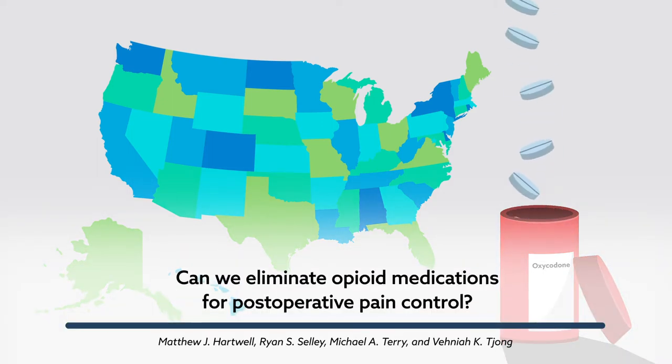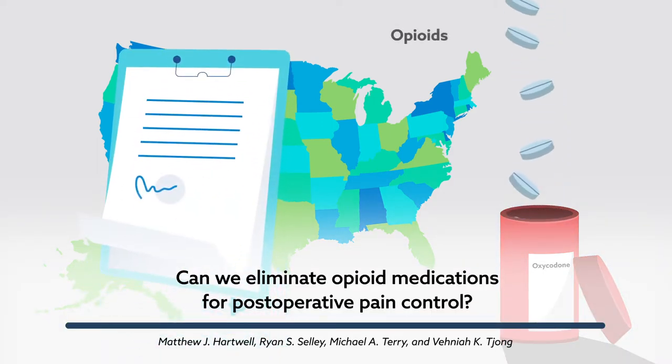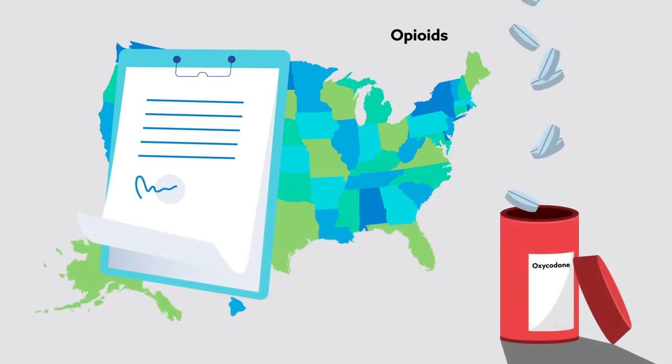The United States is in crisis. As the highest prescriber of opioids in the world, the U.S. has created a dangerous oversupply of powerful, addictive drugs.